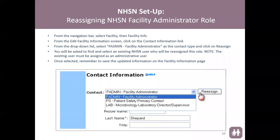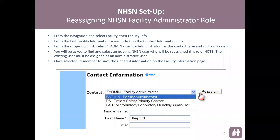The person you are reassigning does have to be an existing NHSN user. If the person is not already an NHSN user, the highest-level administrator at that facility can send a letterhead to NHSN stating that this person is no longer going to be the NHSN Facility Administrator and requesting reassignment to a new person, providing their email address. NHSN will then send an invitation to that new user so they can complete their SAMS steps, and once activated they will become the NHSN Facility Administrator.